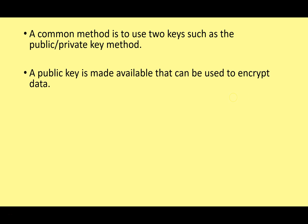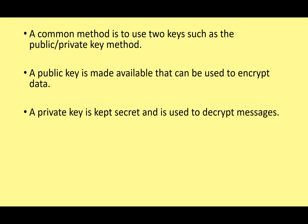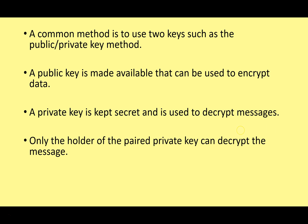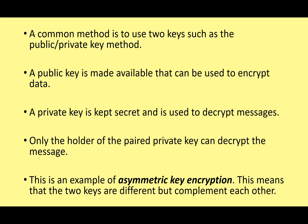There is a public key, which is available and can be used to encrypt data but not decrypt it. There is a private key, which is kept secret and can only be used to decrypt messages. Only the holder of the paired private key can decrypt the message. This is asymmetrical key encryption — the two keys are different but complement each other. The public key is a one-way system: it can encrypt data but cannot decrypt it once it's been encrypted.